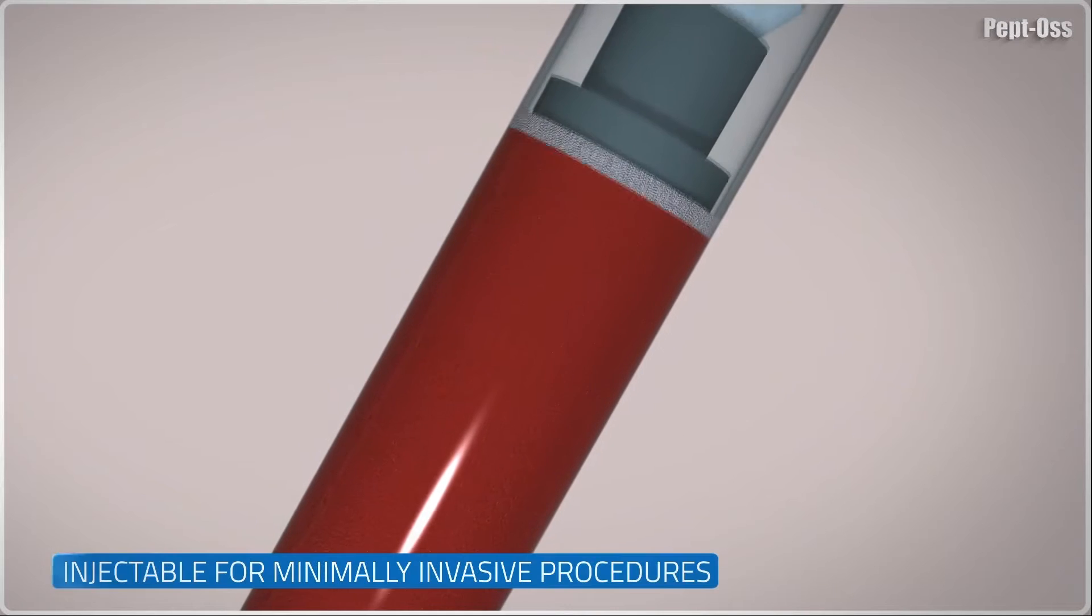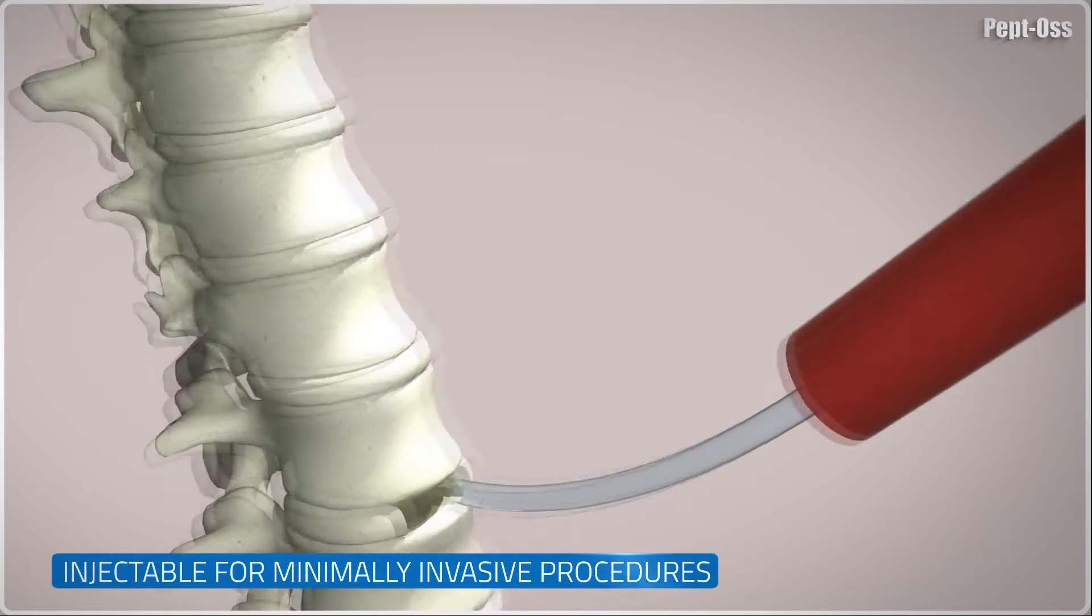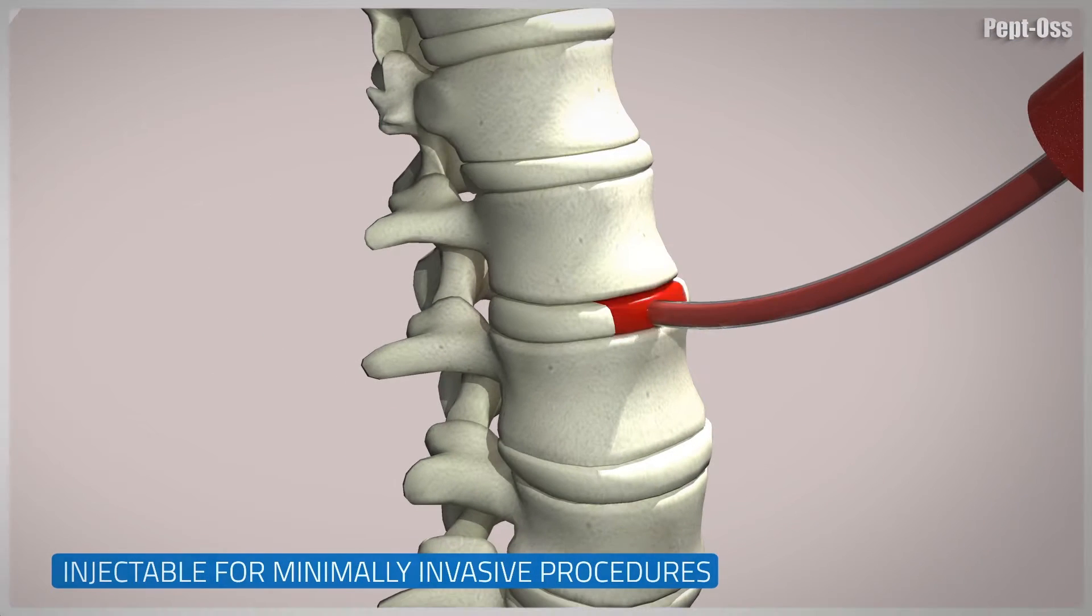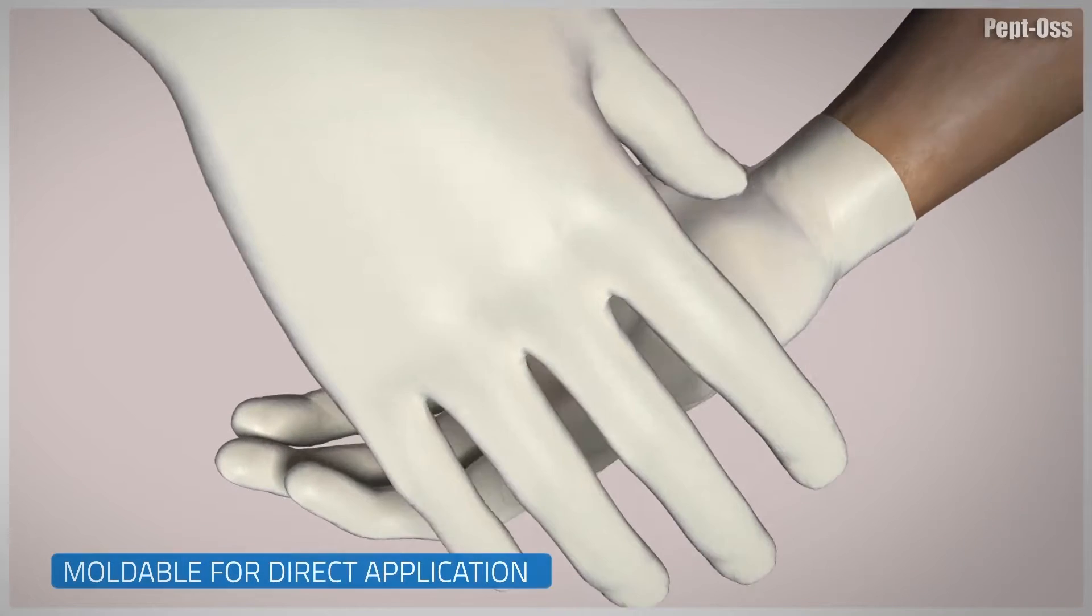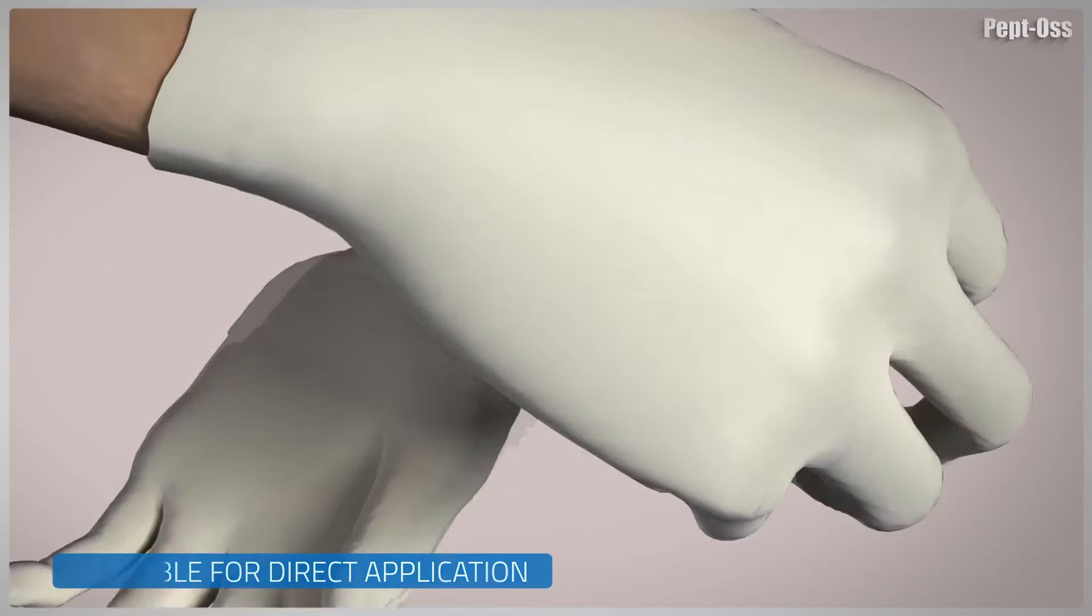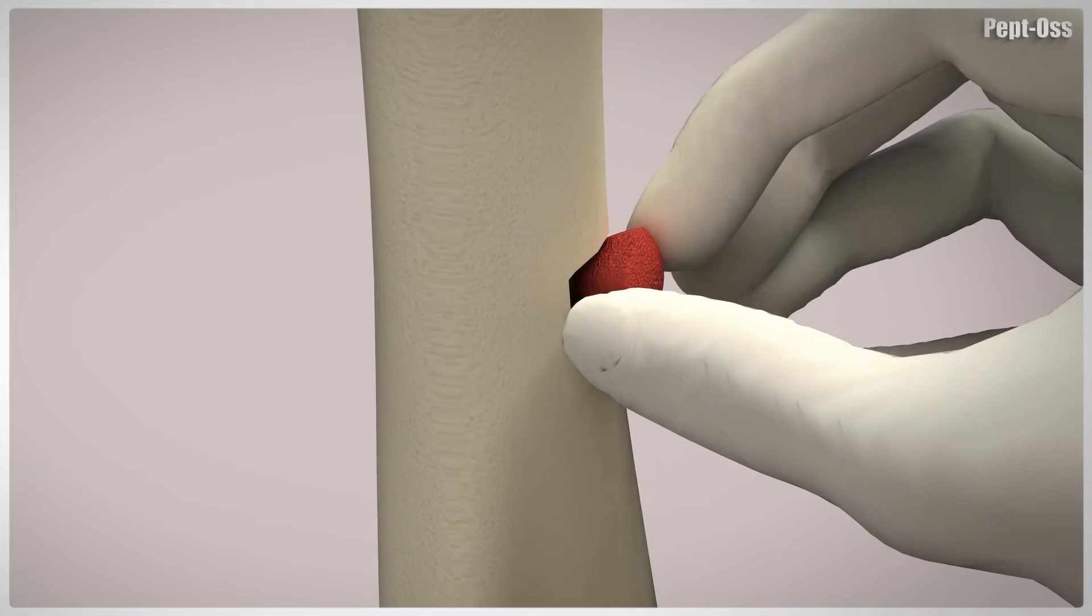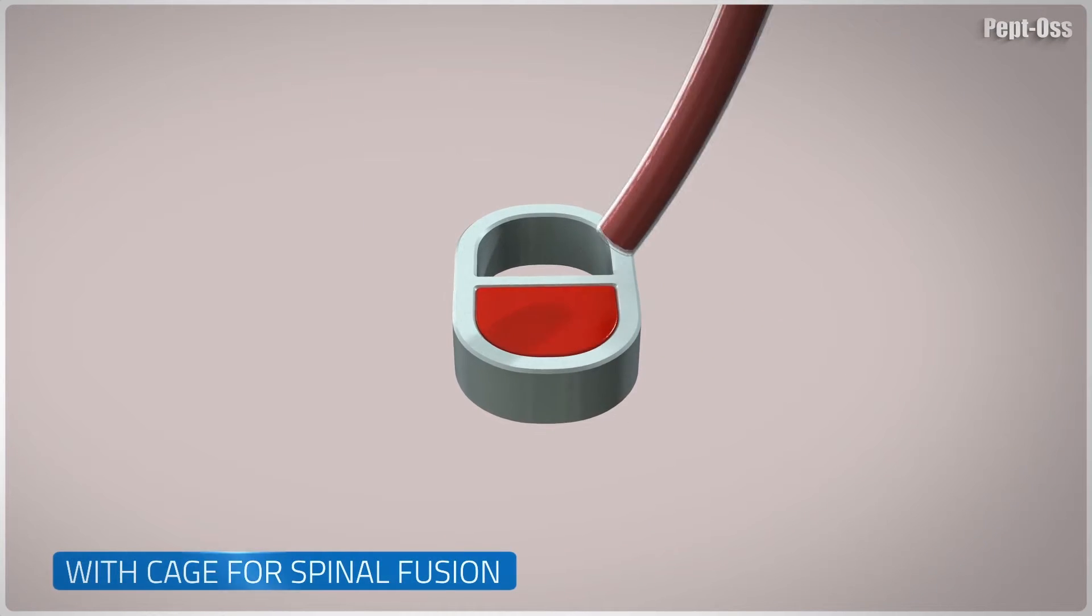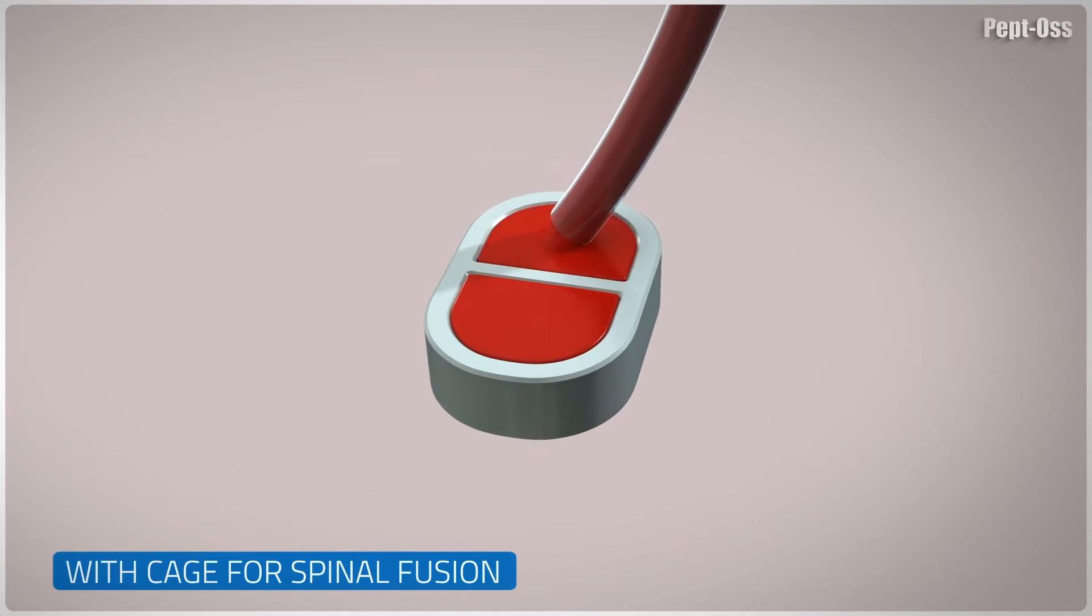Activated by adding the patient's own blood, Peptos can be injected for minimally invasive procedures. It can be molded into shape outside the body and then introduced directly onto the damaged bone void. And it can be used with a cage for spinal fusion procedures.